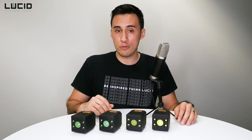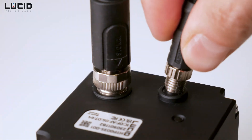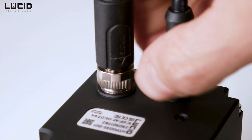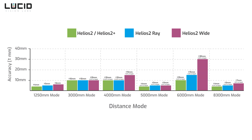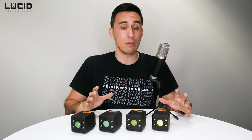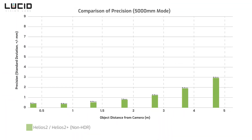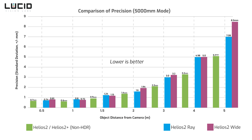The Helios II and II Plus both support power over Ethernet. However, the Helios II Wide uses more powerful Class 1 VCSELs, and the same is true for the Helios II Ray — both models require power through the GPIO port. For accuracy, the Helios II and II Plus offer the best results. For precision, to simplify, we'll look at the most common distance mode customers use: the 5000-millimeter (5-meter) mode. Ultimately, if you want the cleanest, most precise 3D point cloud, the Helios II Plus using HDR mode provides the best 3D data.